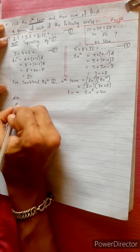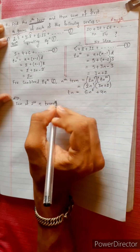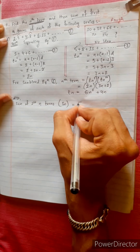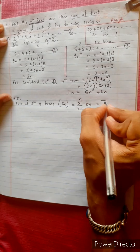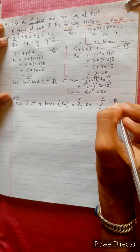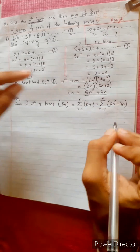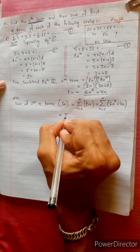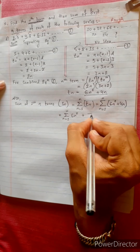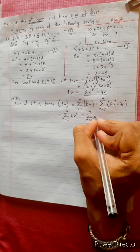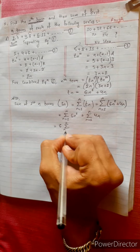Also, the sum of the first n terms, denoted by Sn, uses the formula: Sn equals summation from n=1 to n of tn, which equals summation of 6n² + 4n. Separating this, we get 6 times the summation of n² plus 4 times the summation of n.